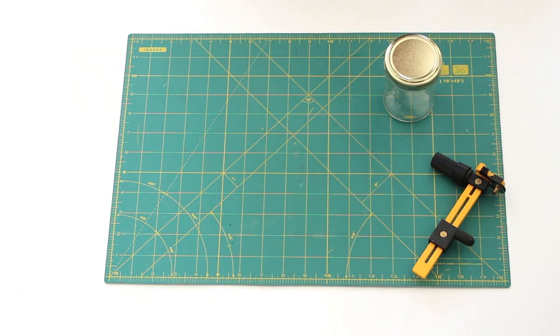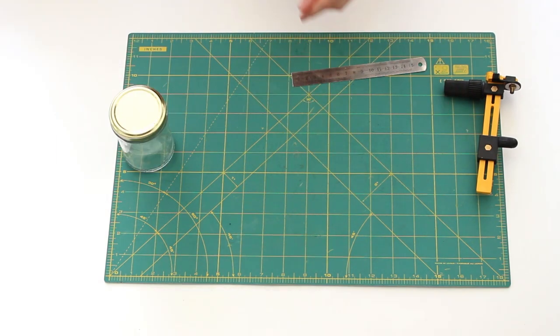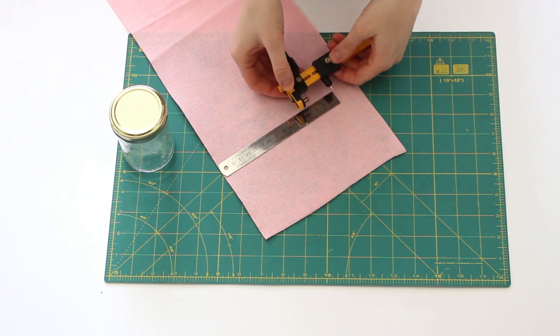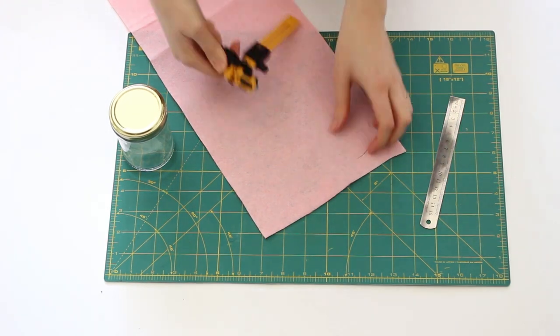I measured the top of the jar lid and cut a circle that matched that size. I didn't mind that some of the lid was still showing but you can add a ribbon if you want to.